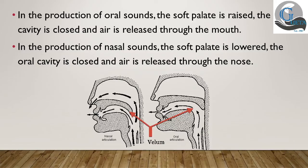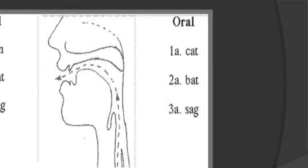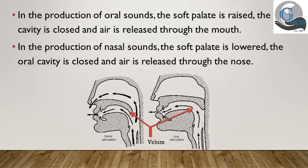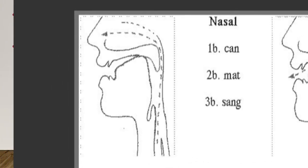The soft palate is directly connected with the pharynx. When the soft palate is raised, the nasal cavity gets closed and the air stream is released through the mouth only — these are oral sounds. In the production of nasal sounds, the soft palate is lowered, the oral cavity gets closed and the air stream is released through the nose.